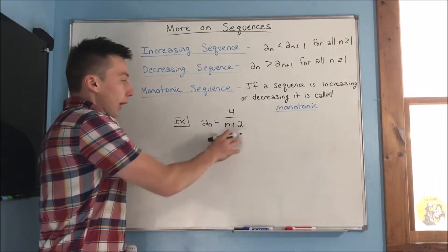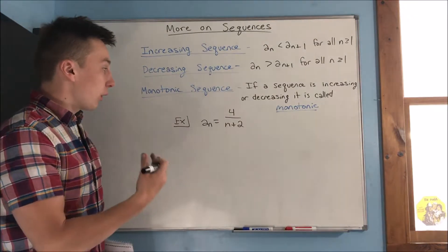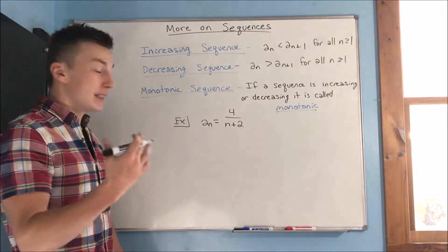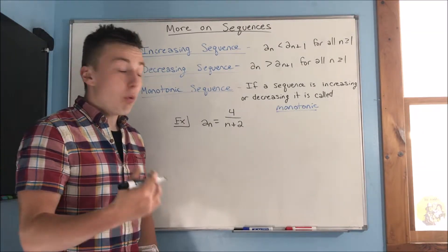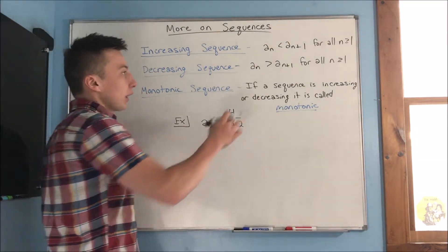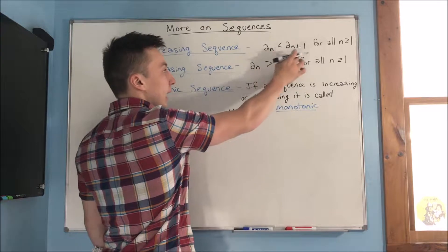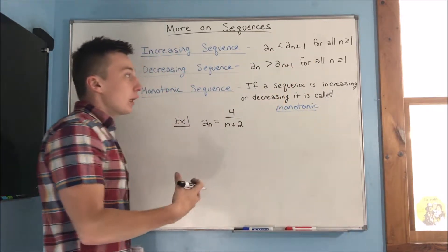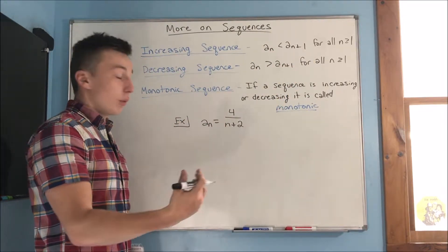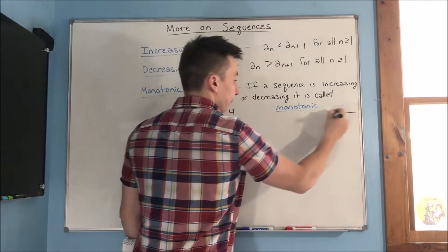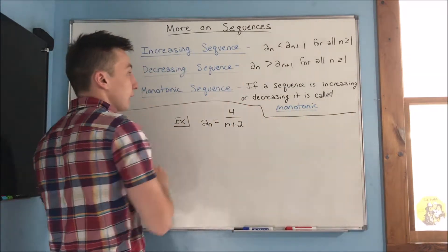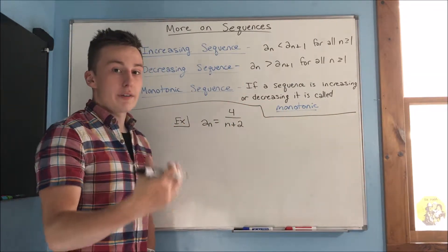So, for example, we have a sub n equals 4 over n plus 2, and we want to see if this is increasing or decreasing. Well, all we need to do, you see what we're comparing it to up here? We're comparing this to a sub n plus 1, and we're trying to figure out whether this is increasing or decreasing.